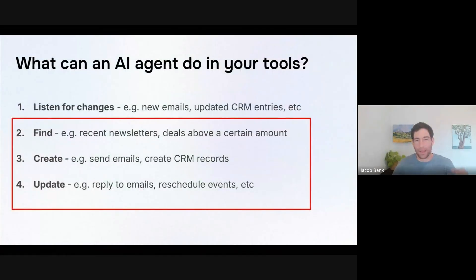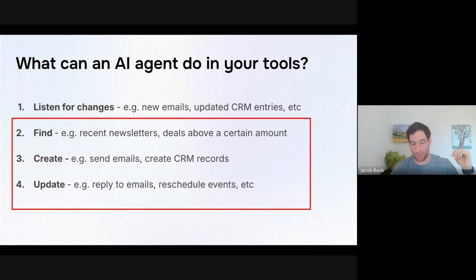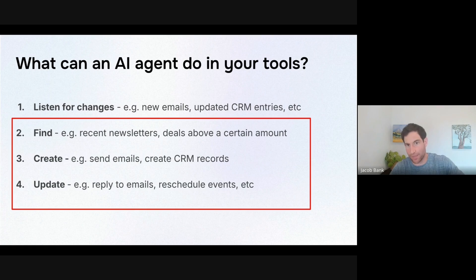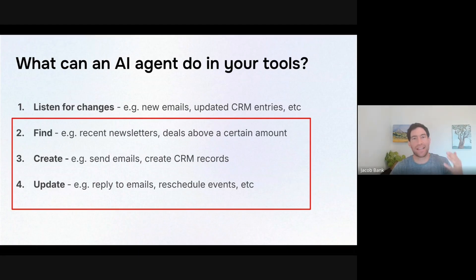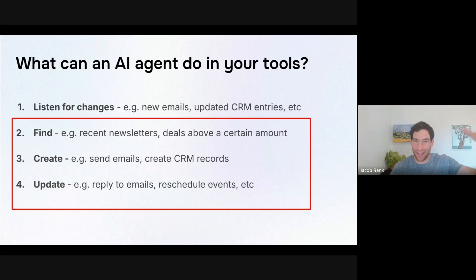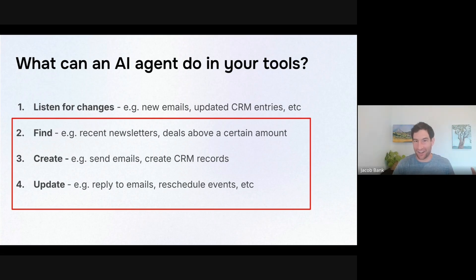To quickly recap: AI agents can integrate with your tools in four ways. They can listen for changes — covered last time in the trigger session, for example a new email or an updated CRM entry. Then they can take three kinds of actions: one, they can search or find things — look up emails that match certain criteria, look up contacts with a certain email address. Number three, they can create new things or add new things — add rows to a spreadsheet, create new records in your CRM, send messages in Slack. Or number four, they can update existing things. When using an update capability, you typically pair it with a trigger or a find step. If you string these different sets of operations together, you can actually take very powerful and advanced actions in all of your underlying tools.